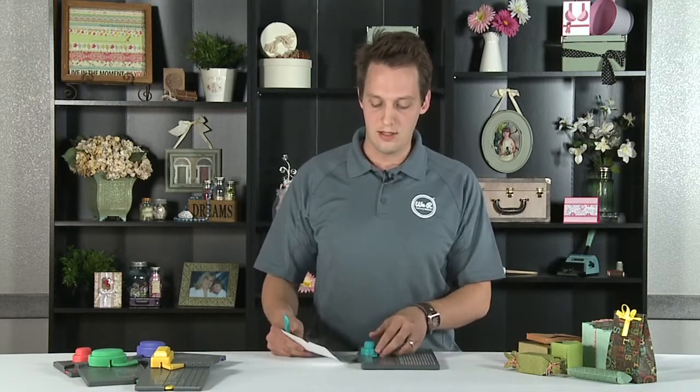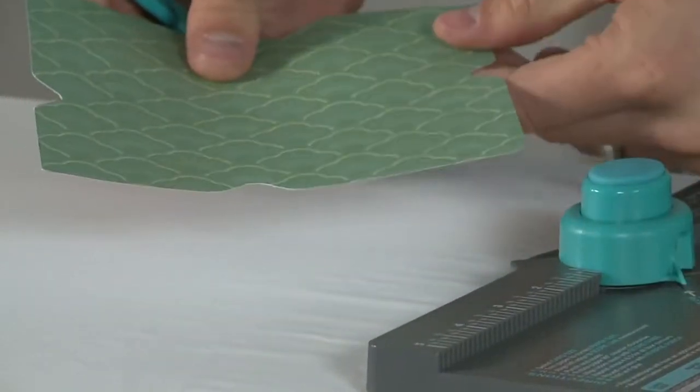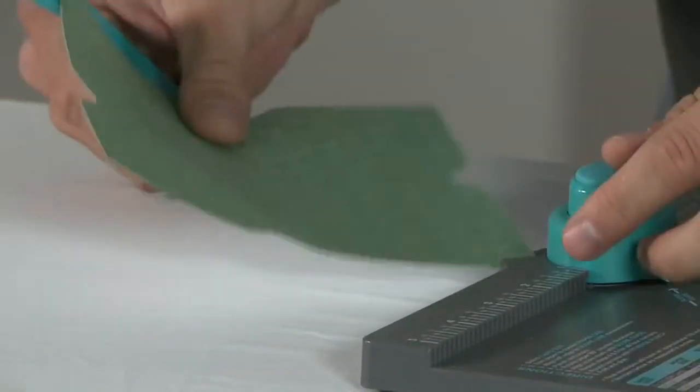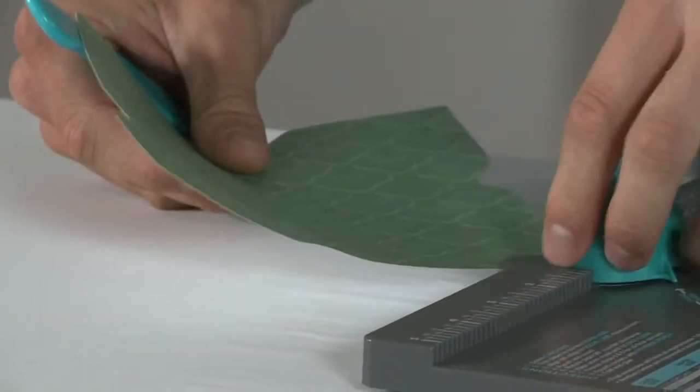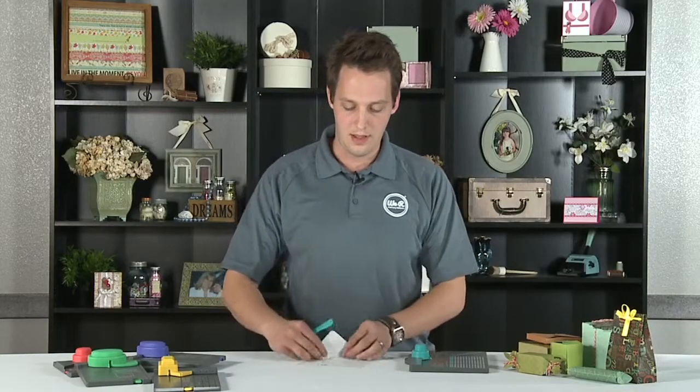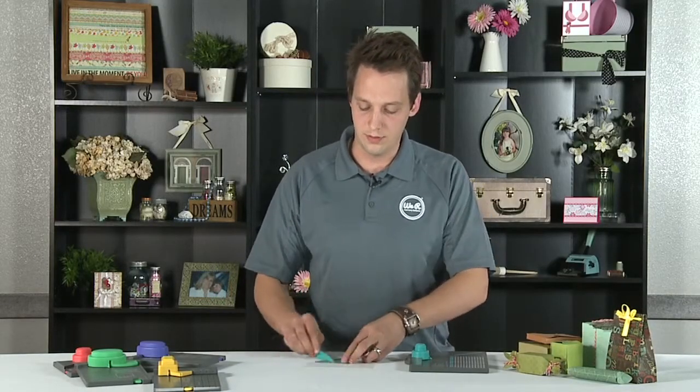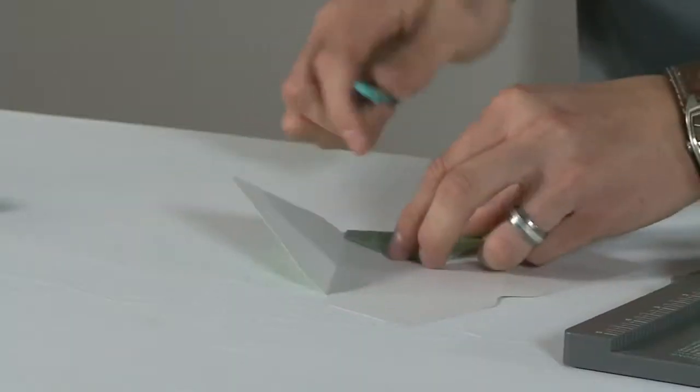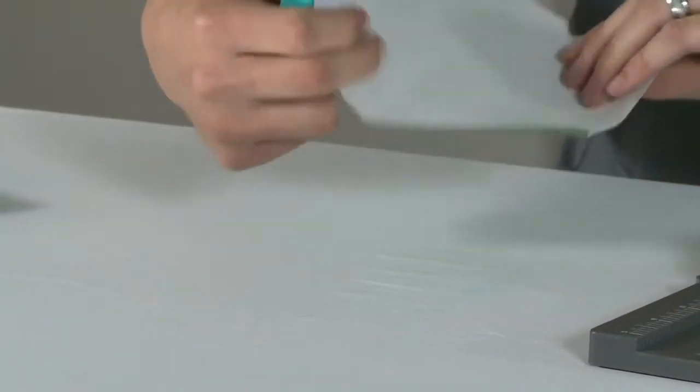Then again we can insert it into the back of the punch, round our corners to get a more professional look. And then our scoring tool doubles as a bone folder so we can fold all of these flaps down.